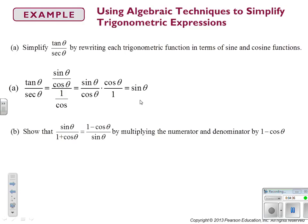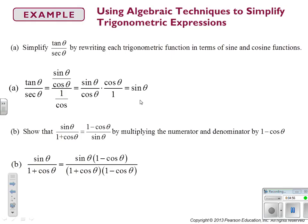Let's look at part B: show that sine θ over (1 + cos θ) is equal to (1 − cos θ) over sin θ. One way to deal with that is to multiply the numerator and denominator by (1 − cos θ). We're keeping the right-hand side stagnant — not touching it — and multiplying the top and bottom of the left side by (1 − cos θ). Why do you think they picked (1 − cos θ)?